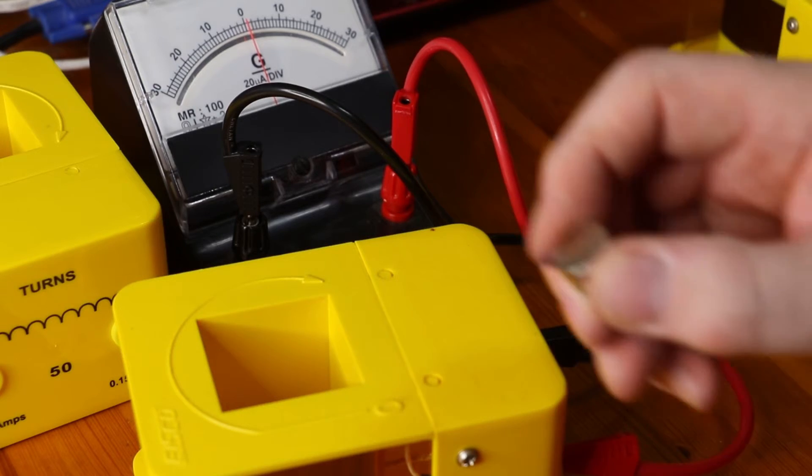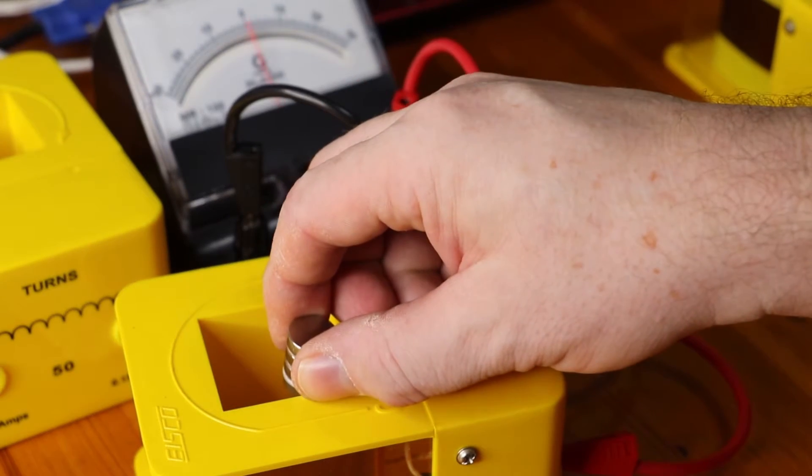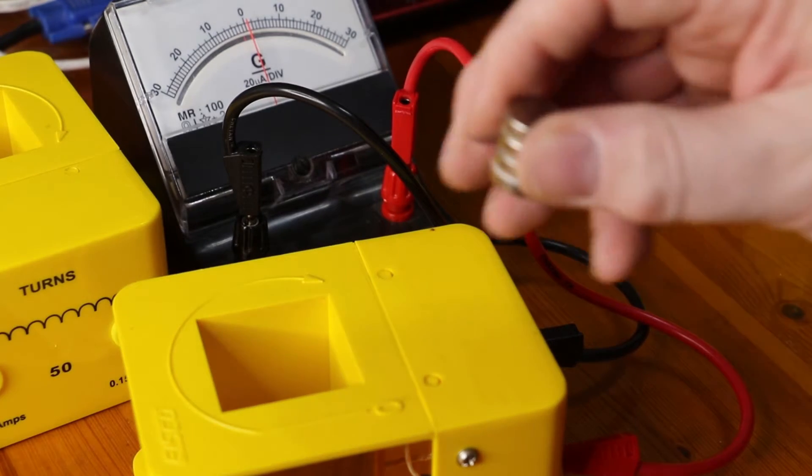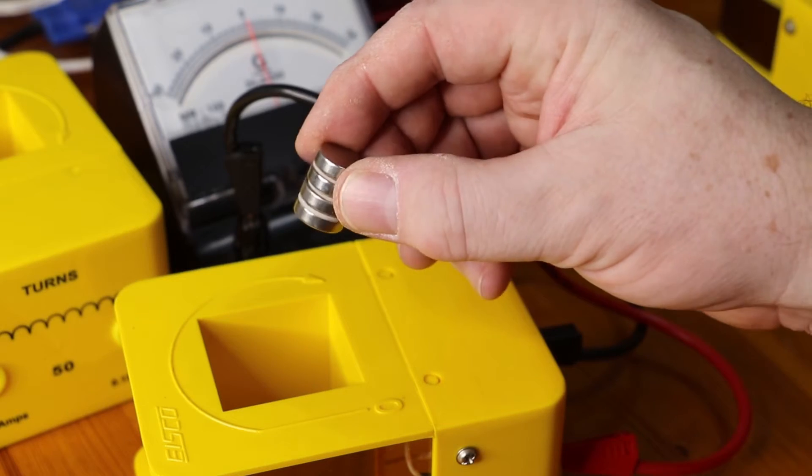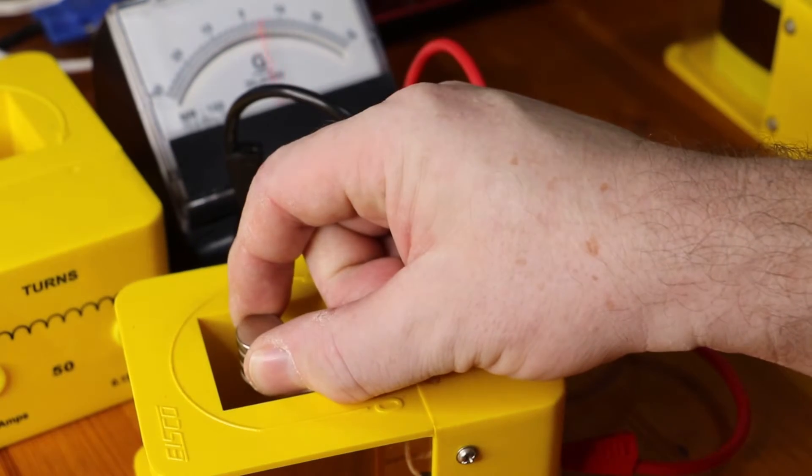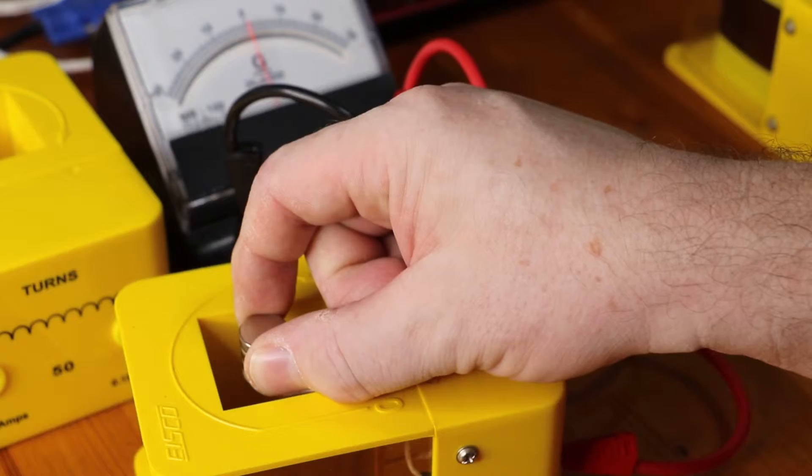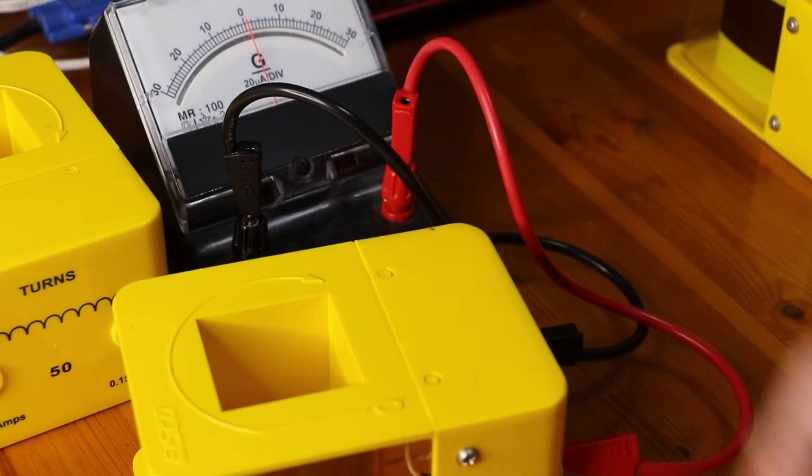You'll notice that when I put it in slowly I had a deflection one way and it goes out the other way, but when I put it in quickly I turn the magnet over. So if I don't, this time we'll get a big deflection to the right and coming out a big deflection to the left.